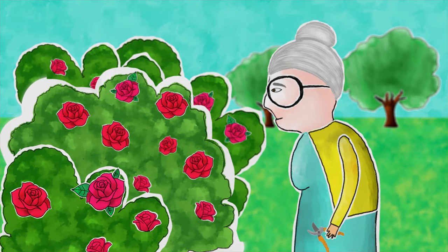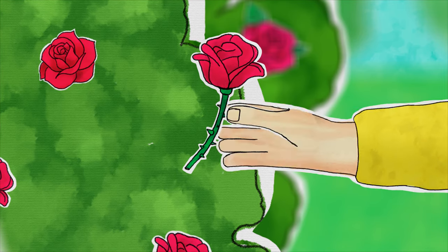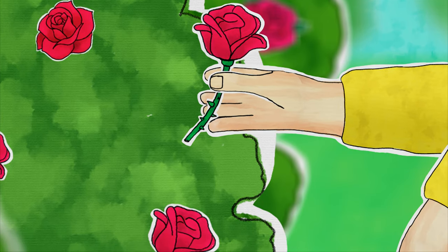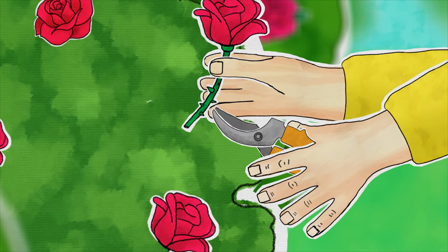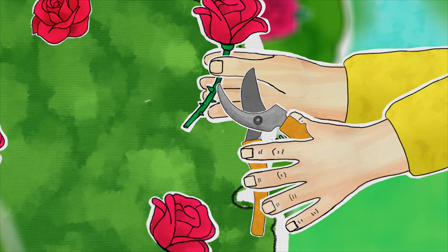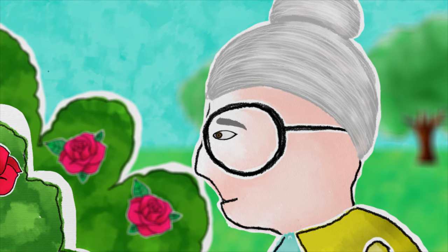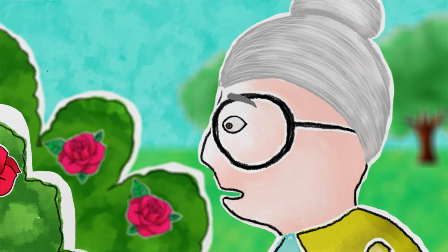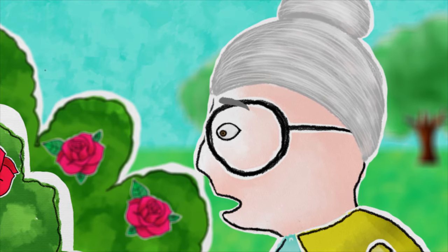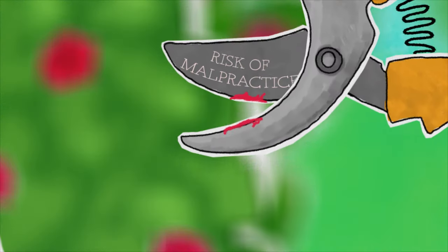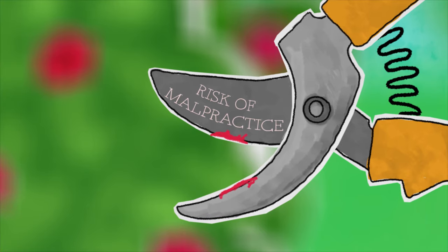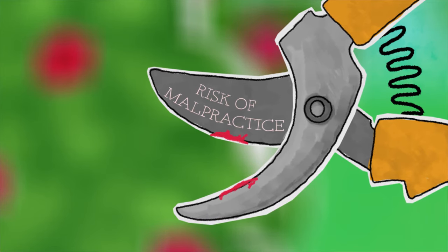Almost everybody agrees that deliberate harm by a surgeon is utterly intolerable and will be held liable. The question then is what happens when there's some form of culpability which is less than deliberate harm, either ordinary negligence or recklessness?